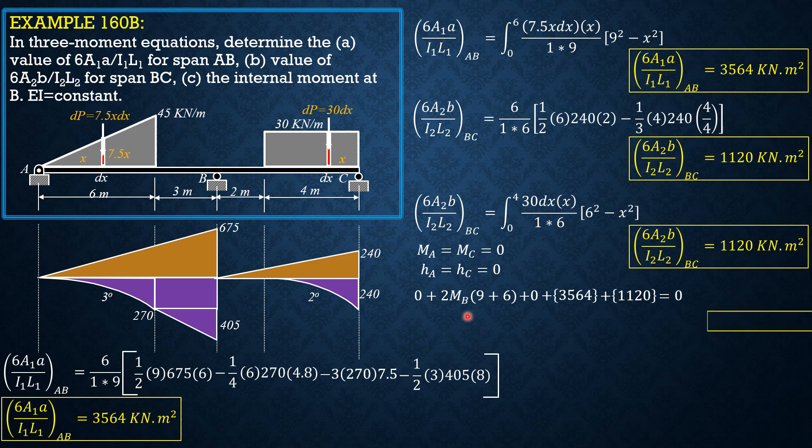So, from here, we can now solve the internal moment at B and B is equal to negative 156.133 kilonewton meter. So, that's it.